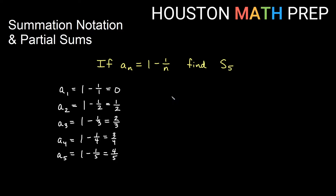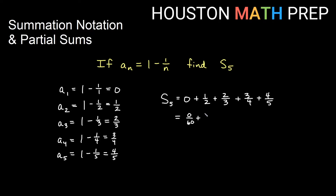Once I have the first five terms, S5 — the partial sum of the first five terms added together — is 0 plus one-half plus two-thirds plus three-fourths plus four-fifths. If we get a common denominator of 60, multiplying each fraction appropriately, and add everything up, we get 163 over 60.